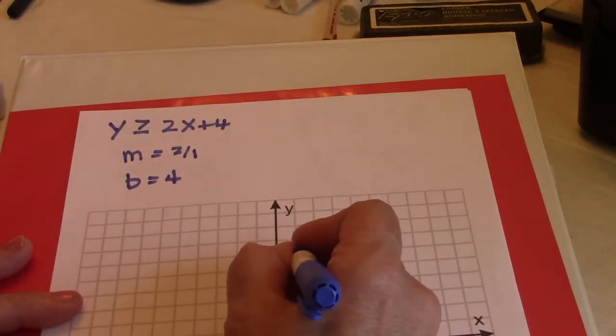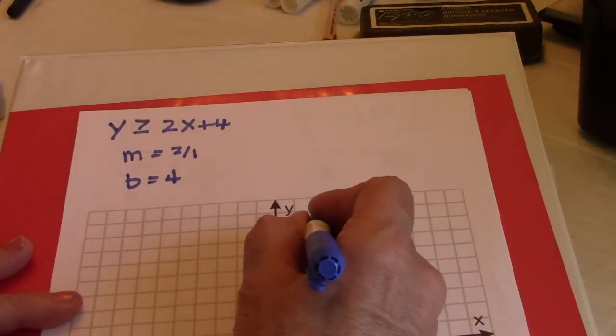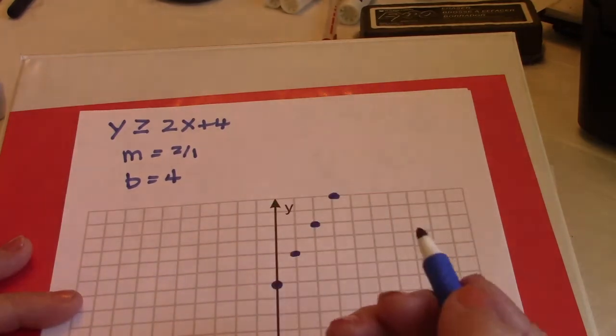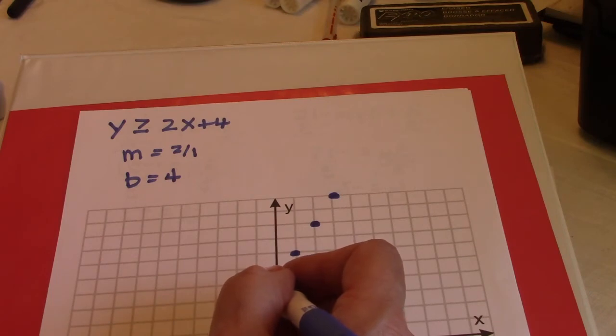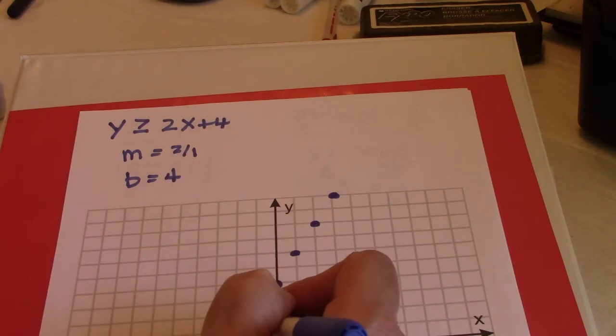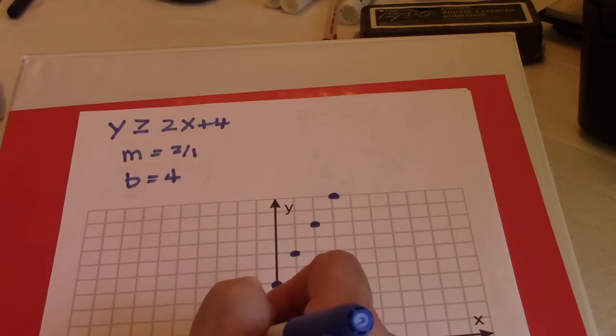My slope is a positive 2 over a positive 1, so it's up 2 over 1, up 2 over 1, up 2 over 1. Or remember we said a negative 2 over a negative 1 is the same as a positive, so we could go down 2 and to the left 1, down 2 and to the left 1.